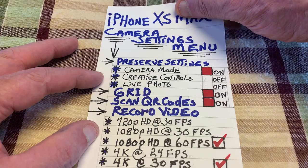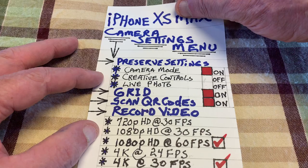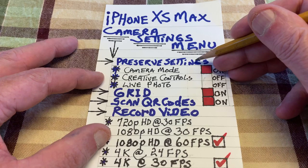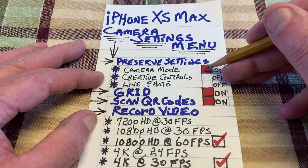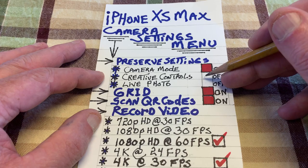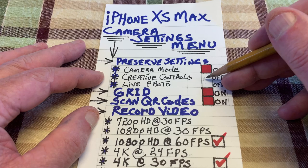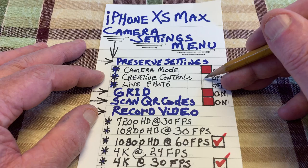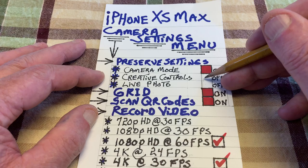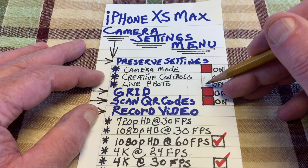When you get into your camera settings menu, the first thing you're going to run into is Preserve Settings. Tap in there — there are three things: camera mode, creative controls, and live photo. Camera mode preserves and remembers the last mode you were in, whether it be picture or movie or whatever. I have that checked. Creative controls remembers the last editing controls used — filters, transitions, special effects, that kind of stuff.